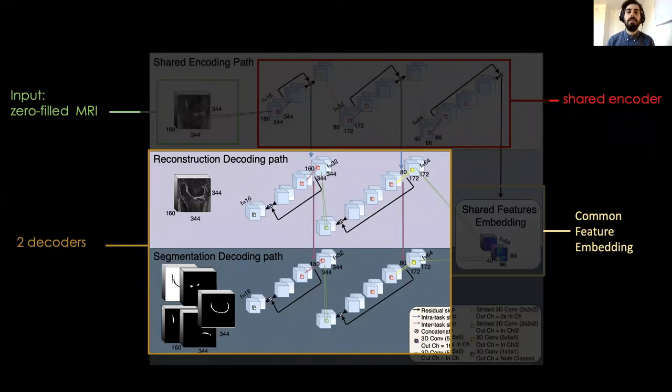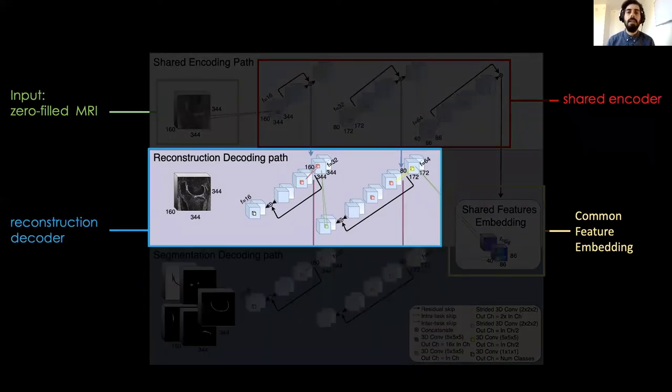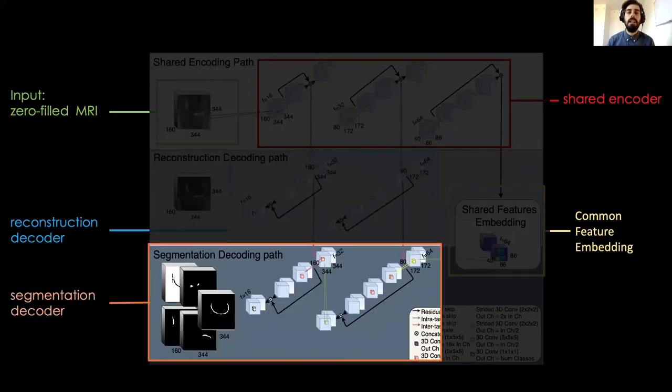The architecture has two decoders, both inverted replicas of the encoder. One performs image reconstruction. The other, segmentation.